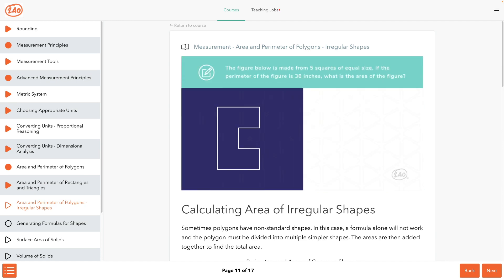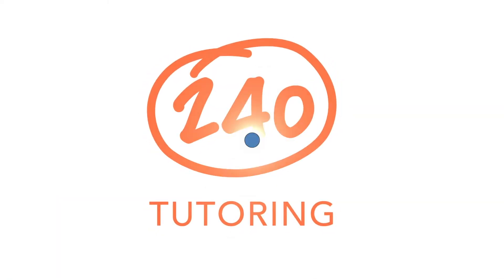The figure below is made from five squares of equal size. If the perimeter of the figure is 36 inches, what is the area of the figure? First, sketch in the five squares composing the figure. In this case, the perimeter of the figure is made up of 12 sides of the squares as shown. Therefore, the side length of each square can be found by taking the total perimeter and dividing it by the number of sides that make up the perimeter of the shape. So 36 divided by 12 gives us a side length of three inches per side. Need more of a refresh on area? We've got it all for you in the 240 study guide.